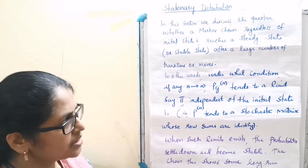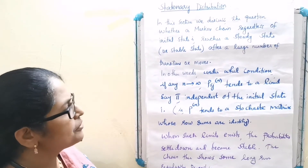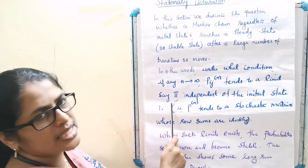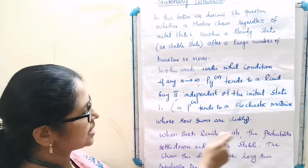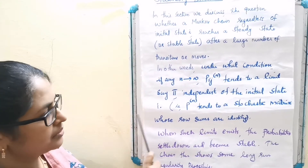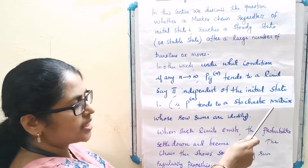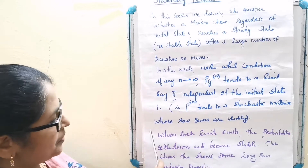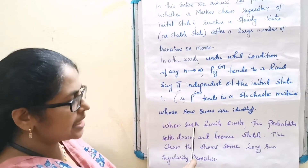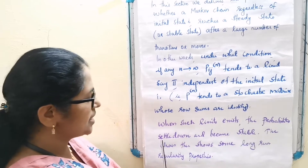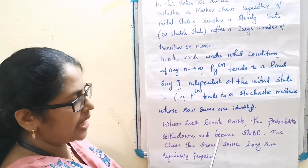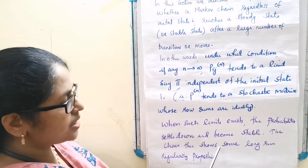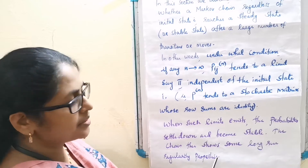In other words, under one condition, if n tends to infinity, Pijn tends to a limit, say pi, independent of the initial state i. That is, Pijn tends to a stochastic matrix whose row sums are identity. When such limits exist, the probability settles down and becomes stable, and the chain shows some long-run regularity properties.